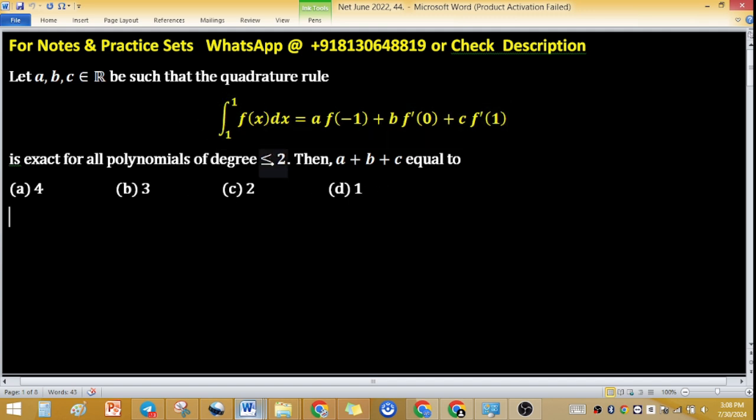So for the quadrature rule, because the polynomial is at most degree 2, first consider a linear polynomial, very simple: f(x) equals 1. This implies f'(x) equals 0. Now from the above equation, integral from -1 to 1.